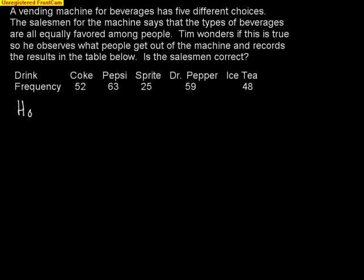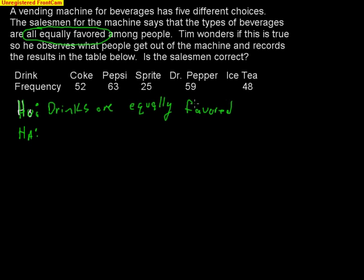The first thing we need here is a null hypothesis and the alternative hypothesis. The null hypothesis—you use words here in a chi-square test because the null hypothesis is what the manager says. The manager said that all drinks are equally favored. So I'm going to put drinks are equally favored. The cool thing about this is that you use the words in the problem. The null hypothesis is somewhere in the problem, you just got to find it. The alternative is simply the opposite of that, which would be drinks are not equally favored. That's exactly what Tim is wondering. He's wondering if maybe this is not true. So we have a null that the drinks are equally favored, just like the salesman said. The alternative is that it's not true.